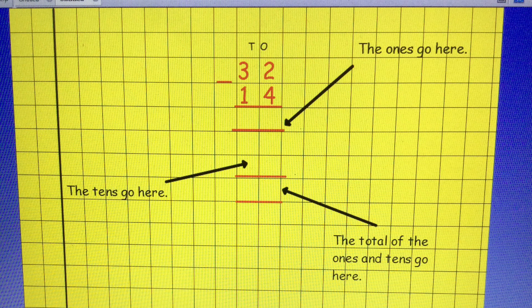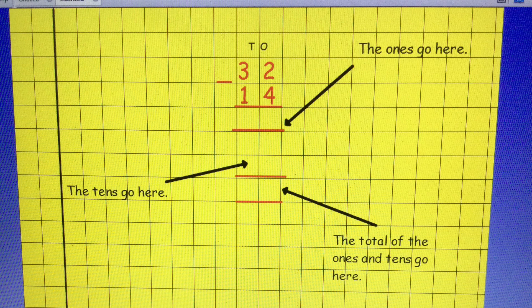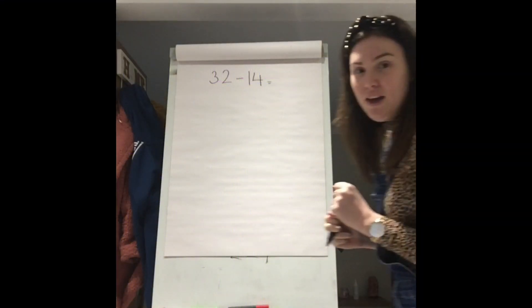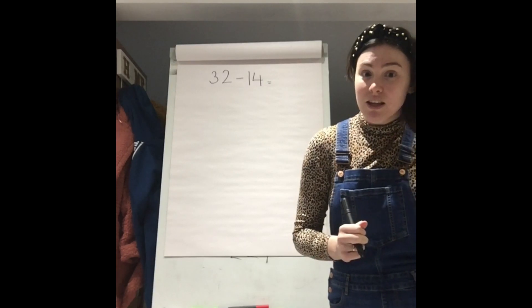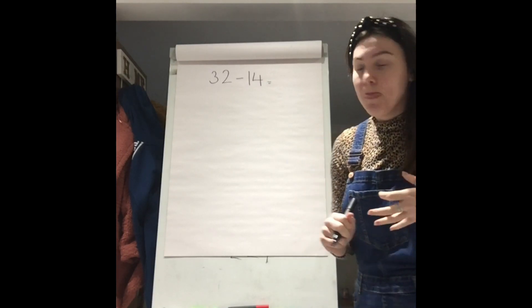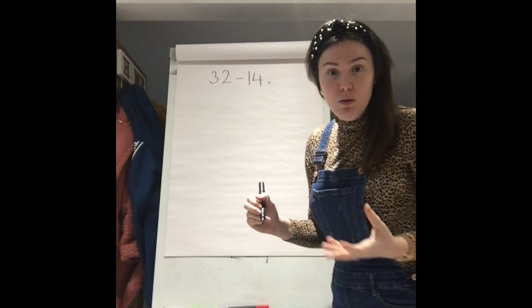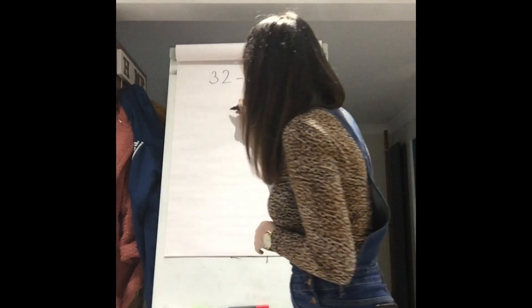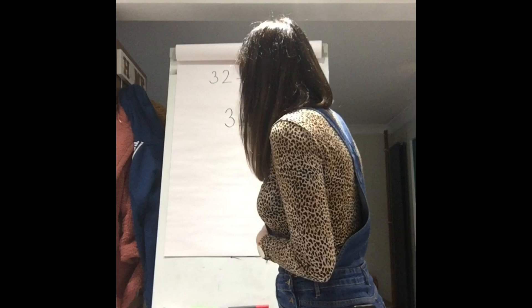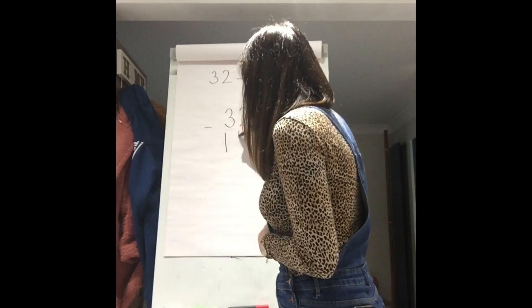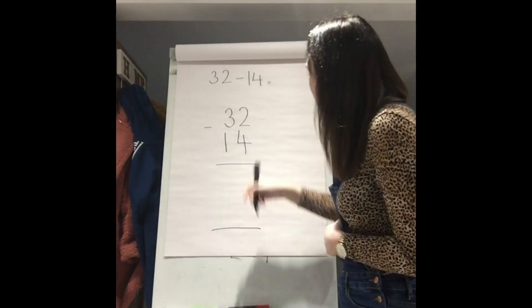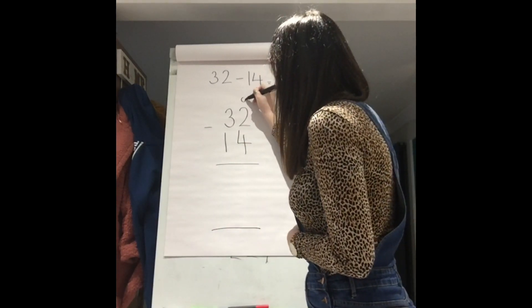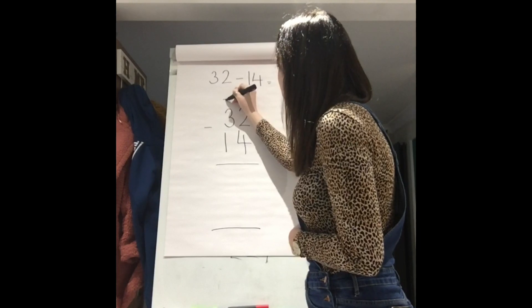This is the first calculation that we are going to do together so grab yourself a piece of paper and a pencil and follow along with me. OK everyone, our first calculation we are going to do today together is 32 take away 14. So we set it out like we would normally, the same as yesterday. 32 take away 14. And here we've got our space for our answer at the bottom.